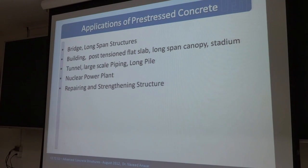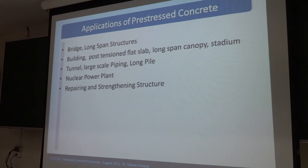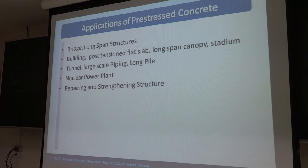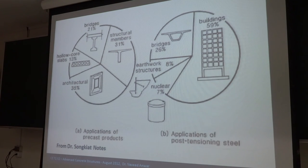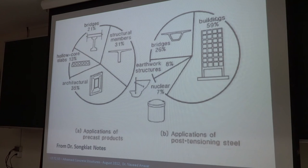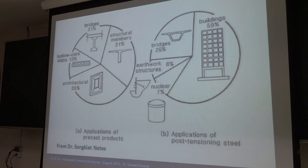These are the applications of prestressed concrete: bridges, long-span structures, buildings where people use post-tension slabs, stadiums, long-span canopies, panels, nuclear power plants to prevent cracking, and repair and strengthening of structures. For post-tensioning usage: buildings account for 59%, bridges 26%, and pavements also use prestressing. Sometimes we use prestressing in retaining structures as well.